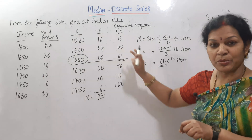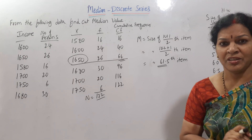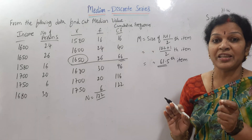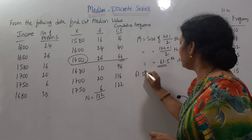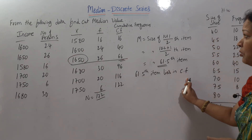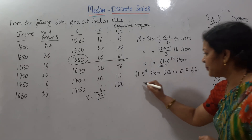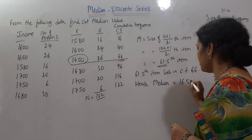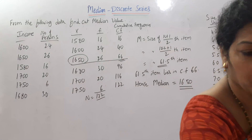You cannot say the cumulative frequency value is the median — the median must always come from the X values. In individual series also we took the middle value from X; here also, the cumulative frequency is only used to identify the exact middle value. Write the sentence: the 61.5th item lies in cumulative frequency 66; hence, median equals 1650.